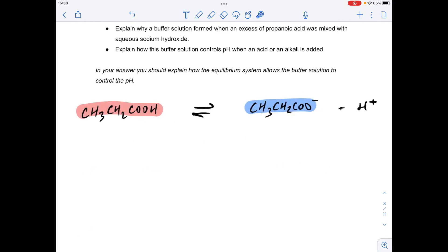Moving on to the second bullet point, now we've established why we've got a buffer solution with these two key components. How does it control pH when acid or alkali is added?